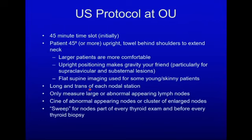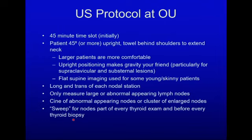We do long and transverse images in each nodal station but only measure large or abnormal appearing lymph nodes — generally those approaching or exceeding one centimeter in short axis. We use cine sweeps recorded in PACS for abnormal appearing lymph nodes or clusters of enlarged lymph nodes. For non-comprehensive protocols, such as thyroid imaging or biopsy, we always do at least a brief sweep of all nodal basins to make sure there are no abnormal lymph nodes, as it can change management.